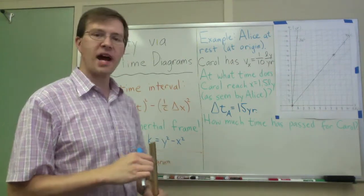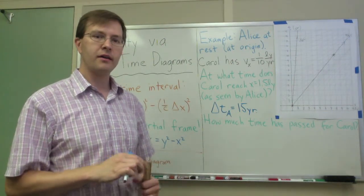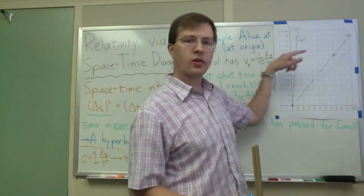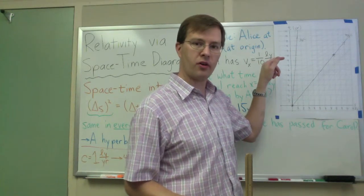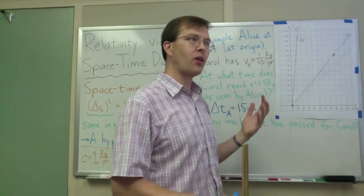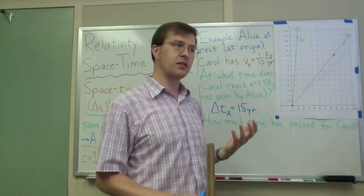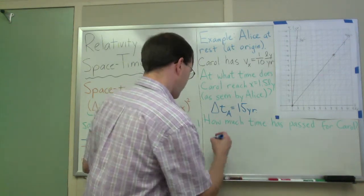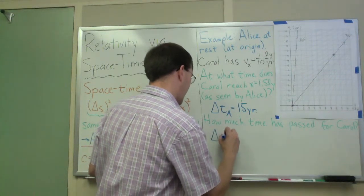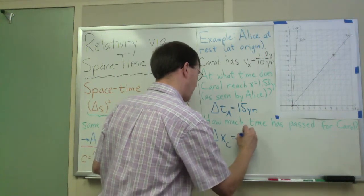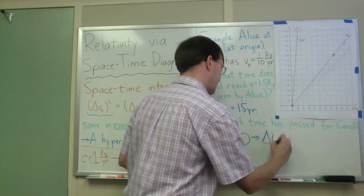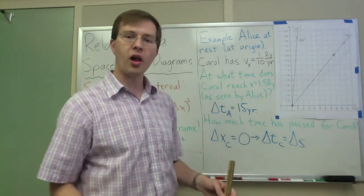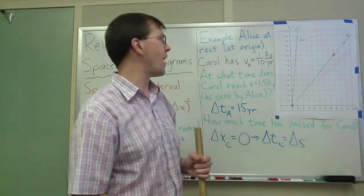But now, let's do the interesting one. Let's ask: how much time passed for Carol along the way? We use the fact that the hyperbolas drawn onto this paper are lines of constant space-time interval, and the fact that Carol doesn't think she's moving in her own reference frame. So we know that delta x, as measured by Carol, is 0. And that means delta t, as measured by Carol, is the same as the space-time interval.